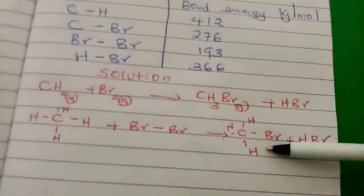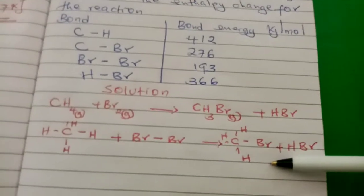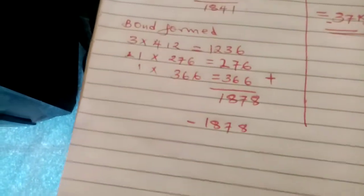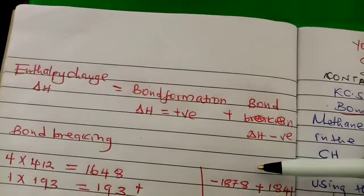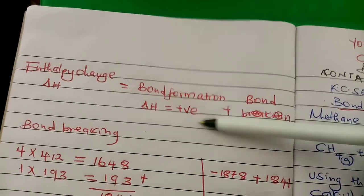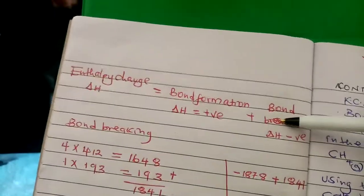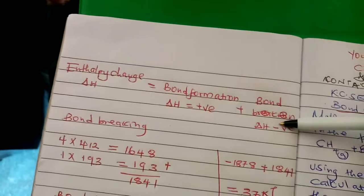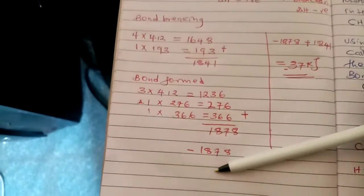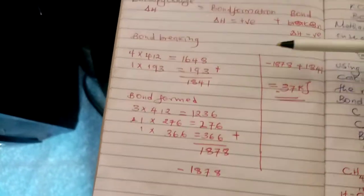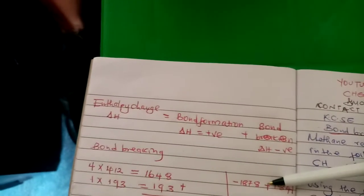We go back to our formula: bond formation, which is exothermic, plus bond breaking, which is endothermic. So we say negative 1878 plus 1841, we get negative 37 kilojoules per mole.